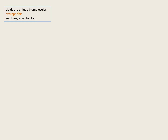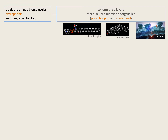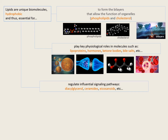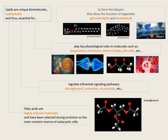They are highly hydrophobic molecules. Lipids such as phospholipids or cholesterol allow the generation of barriers that, in the form of bilayers, allow the formation and function of compartments and organelles within cells. Lipids are essential components of crucial molecules such as lipoproteins or hormones, and they are also important second messengers in the form of diacylglycerols, ceramides, or eicosanoids mediating inflammation. Fatty acids are highly reduced molecules, highly energetic, and in the form of triacylglycerols have been selected during evolution as the main nutrient store of eukaryotic cells.